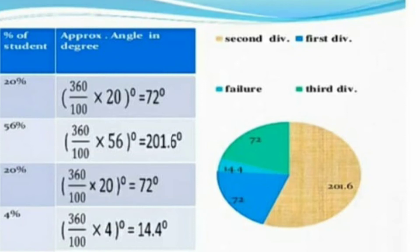For third class, again it is 72 degree angle, they have given green color. For failures, they have given light blue color. In this way you can give that color when you are drawing it manually.